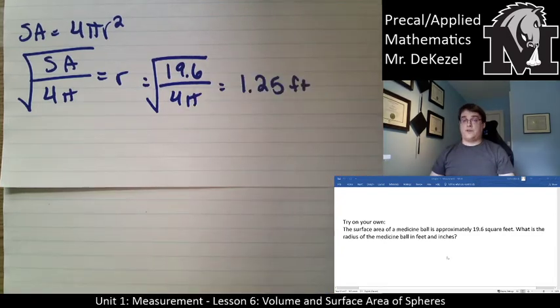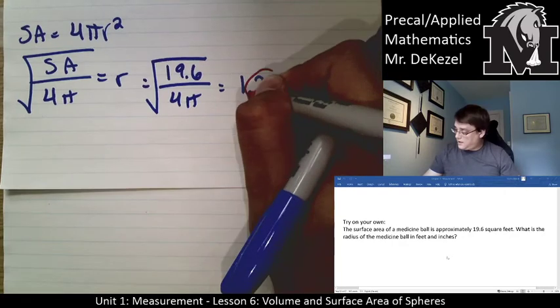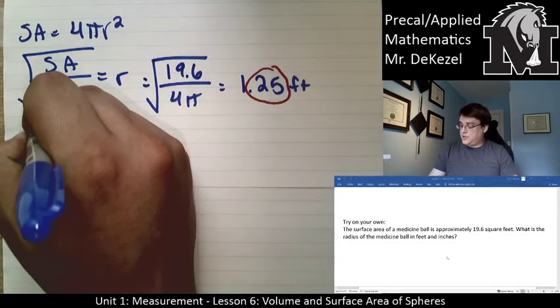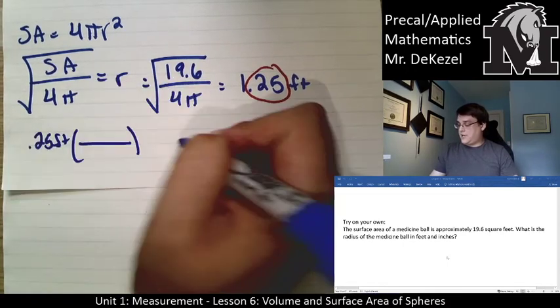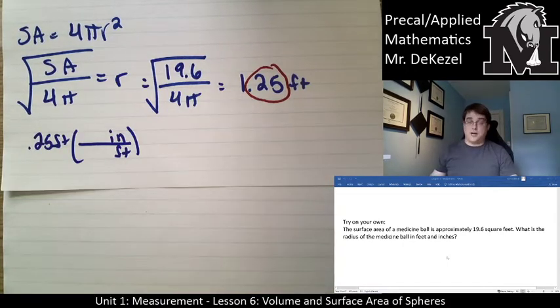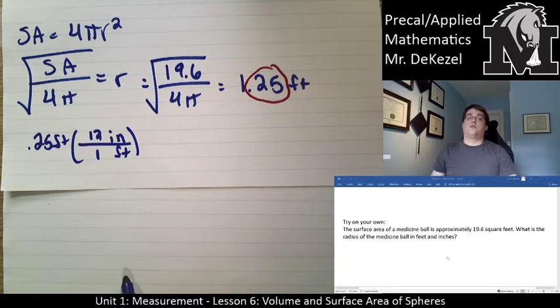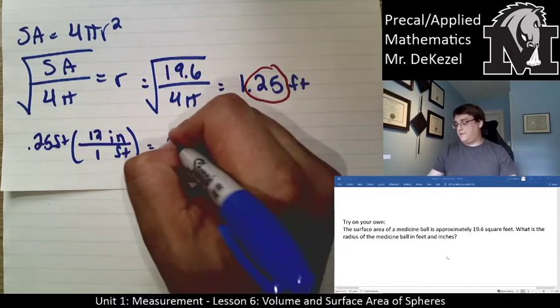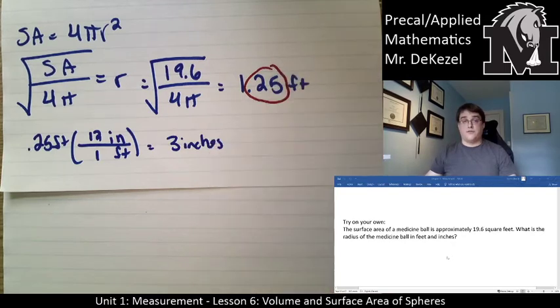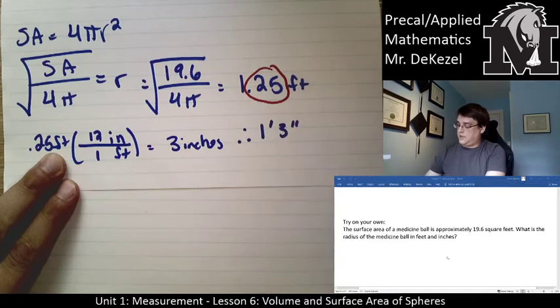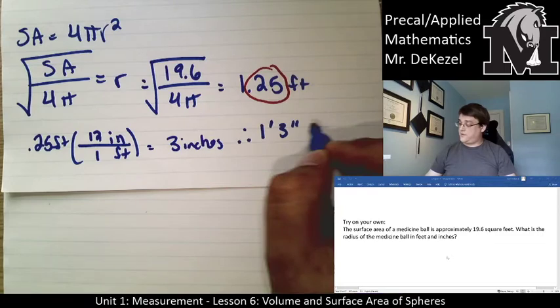Now 1.25 feet is not what we want. We want to take the fraction or the decimal part of the foot and turn that into inches. So we know it's going to be 1 foot, but how many inches? 0.25 feet, I'm going to convert that into inches. Feet on the bottom, inches on the top, 12 inches in 1 foot as we know. 0.25 times 12, so that's essentially like dividing it by 4 and giving us 3 inches. So therefore, it is 1 foot 3 inches. That is the radius of the medicine ball.